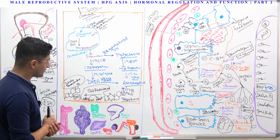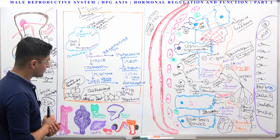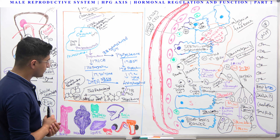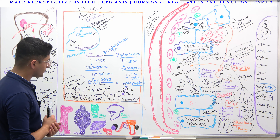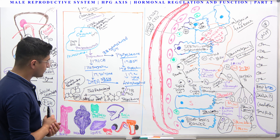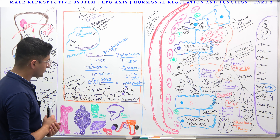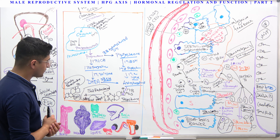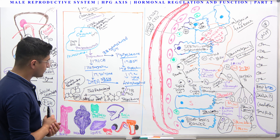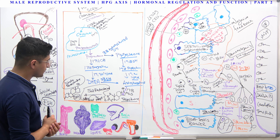When men take a lot of exogenous testosterone — like steroids — to increase muscle mass, what happens? First, you'll see increased muscle mass and growth. You'll also see increased red blood cell production because of greater stimulation of erythropoiesis, so hemoglobin levels go up. But because exogenous testosterone is pumped into the body, it creates a negative feedback so there will be decreased LH production.